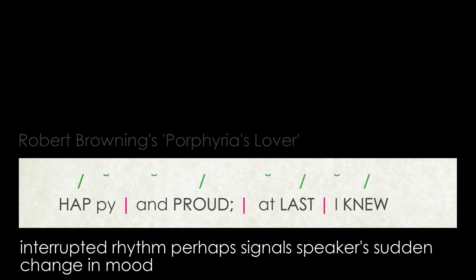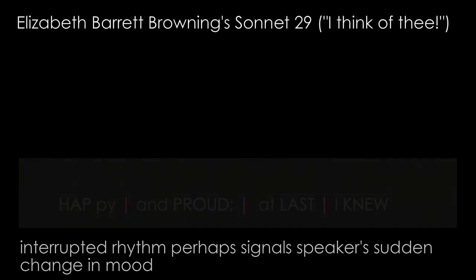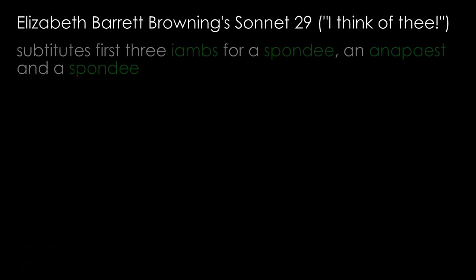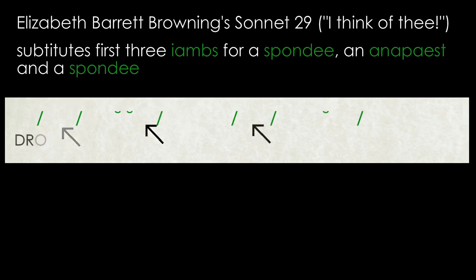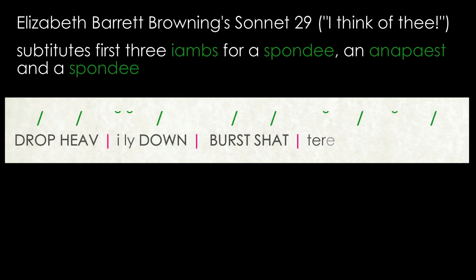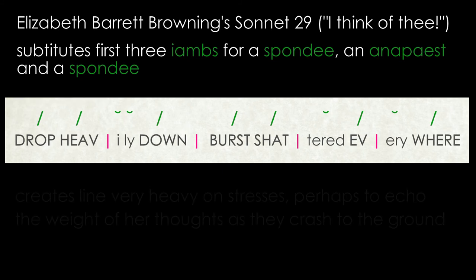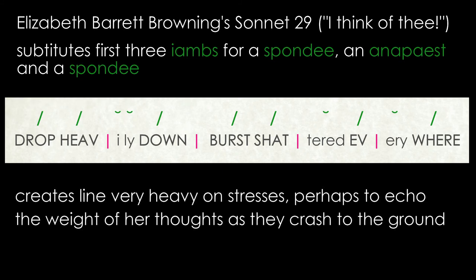In 'I Think of Thee,' Elizabeth Barrett Browning substitutes the first three iambs of one line for a spondee, an anapest, and a spondee — 'drop heavily down, burst shattered everywhere' — to create a line which is very heavy on stresses, echoing the weight of her thoughts as they fall and smash to the ground.